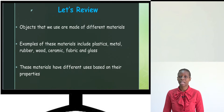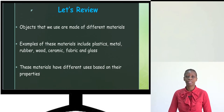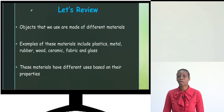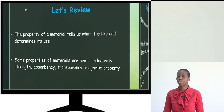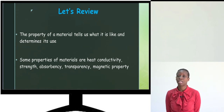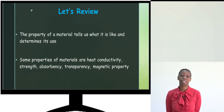First, let us review what we know about materials and their properties. Looking around, we see objects made of different materials — plastics, metals, wood, glass, fabric, and so on. We use them based on what we want them to do. For example, if we want to see through something, like a window in a house, we use glass. So materials have different uses based on their properties.